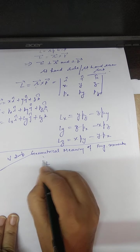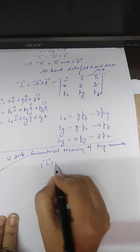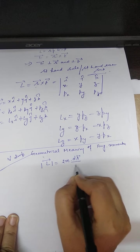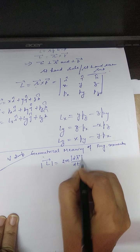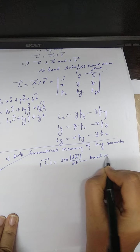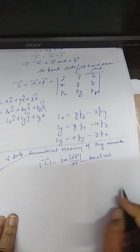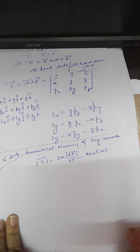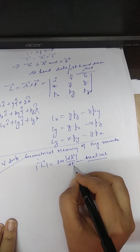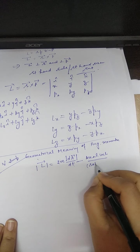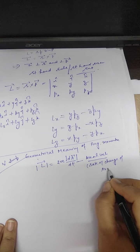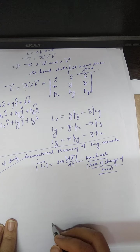The magnitude of angular momentum is twice the mass of the body multiplied by dA/dt, which is the aerial velocity. Aerial velocity means the rate of change of area. When area changes with time, the velocity is said to be aerial velocity.